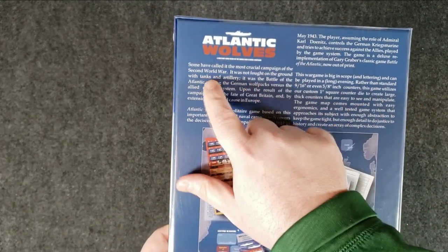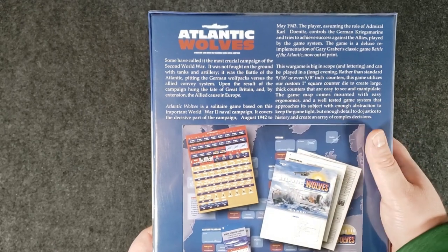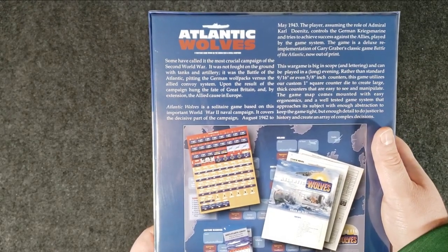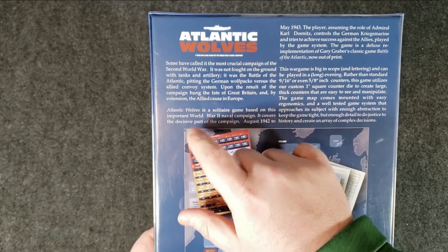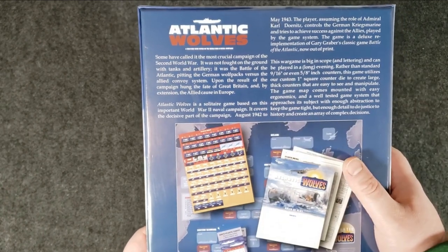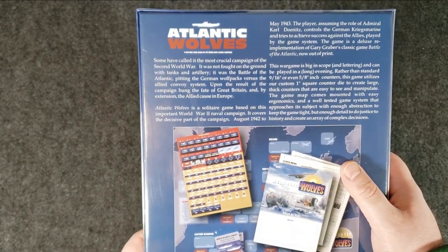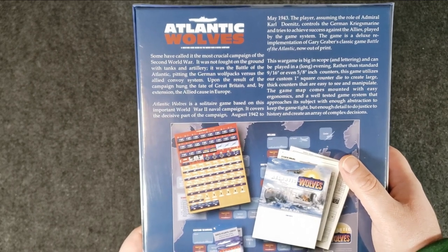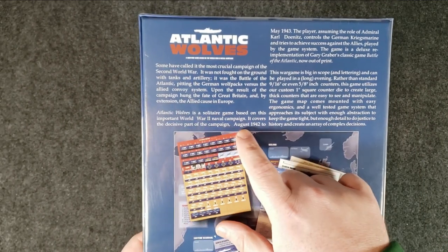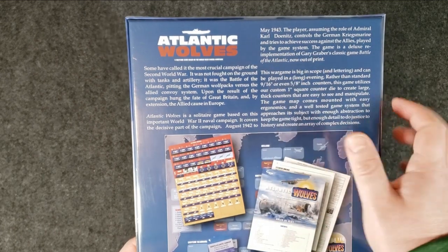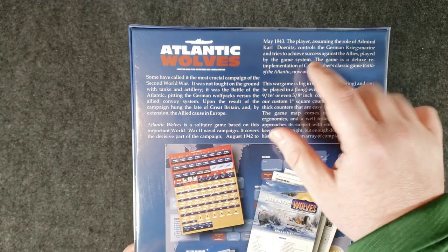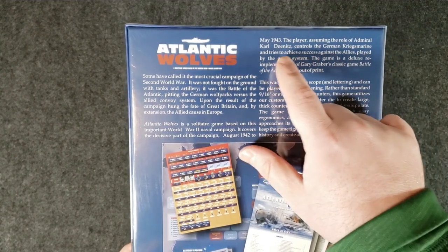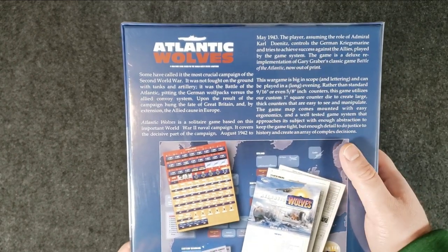Some have called it the most crucial campaign of the Second World War. It was not fought on the ground with tanks and artillery. It was the Battle of the Atlantic, pitting the German Wolf Packs versus the Allied Convoy system. Atlantic Wolves is a solitaire game based on this important World War II naval campaign. It covers a decisive part of the campaign, August 1942 to May 1943. The player assumes the role of Admiral Carl Donitz, controls the German Kriegsmarine, and tries to achieve success against the Allies, played by the game system.